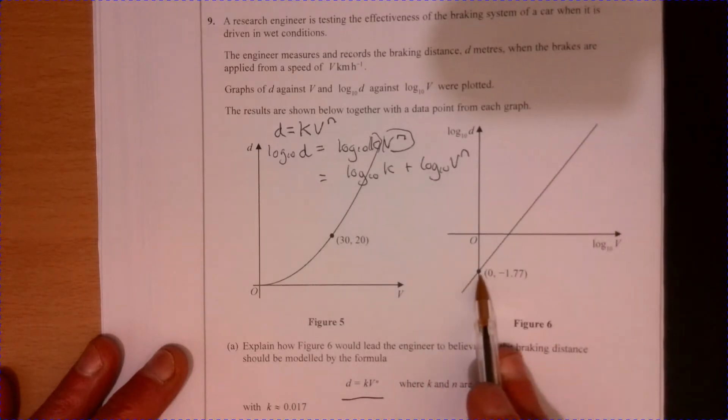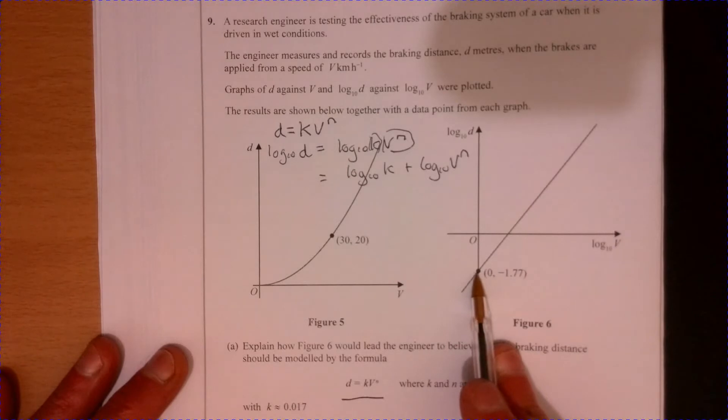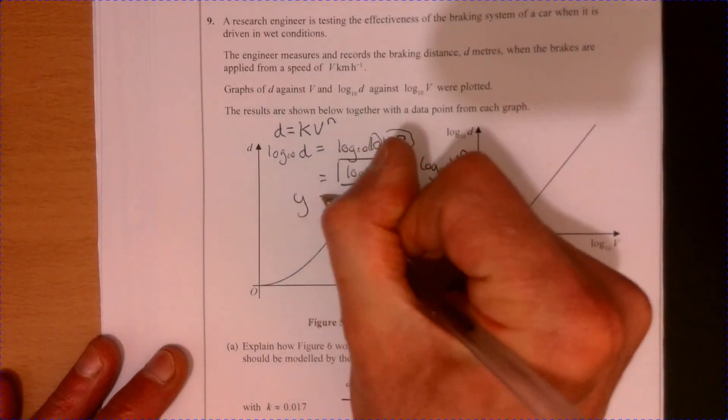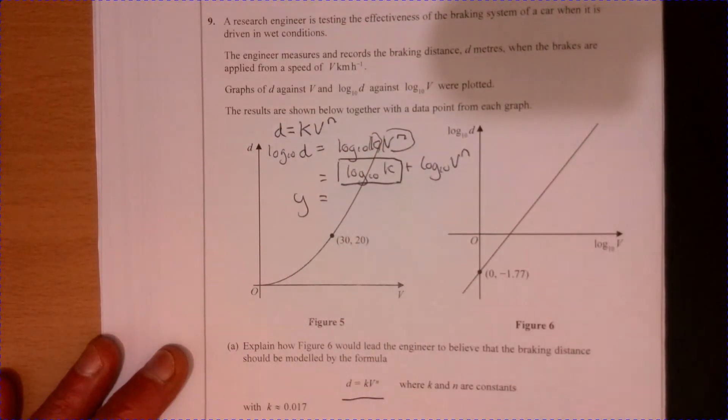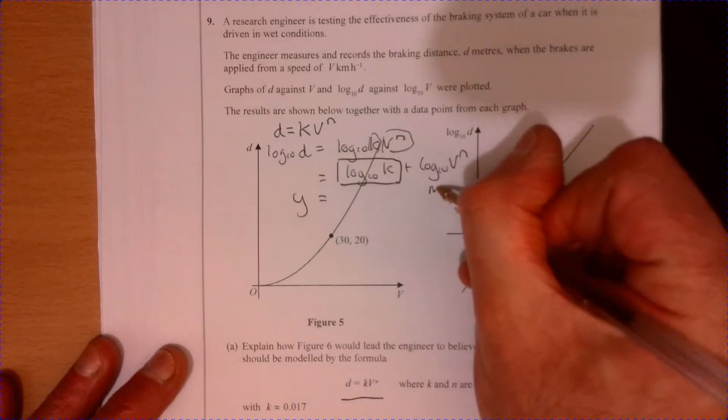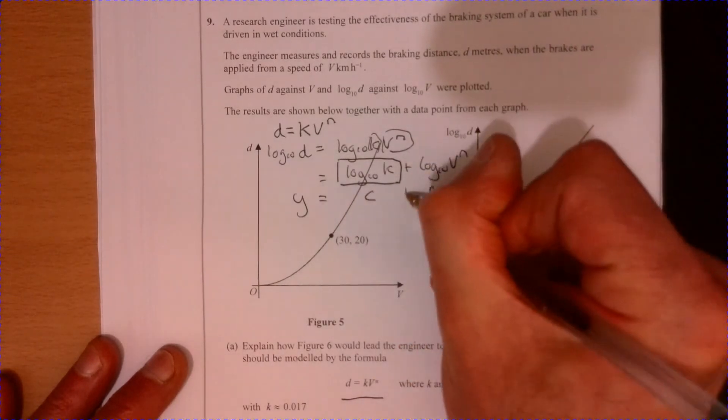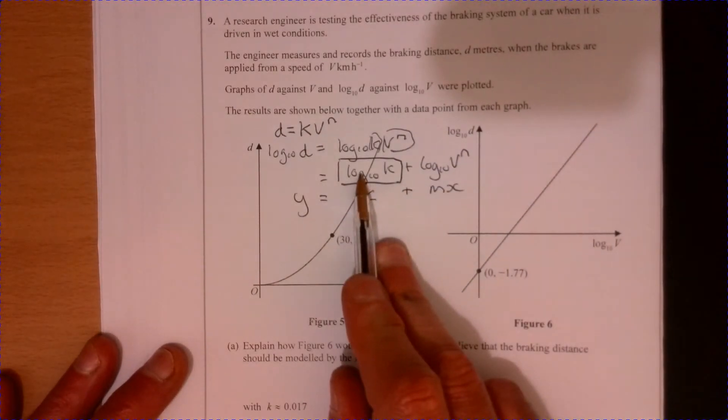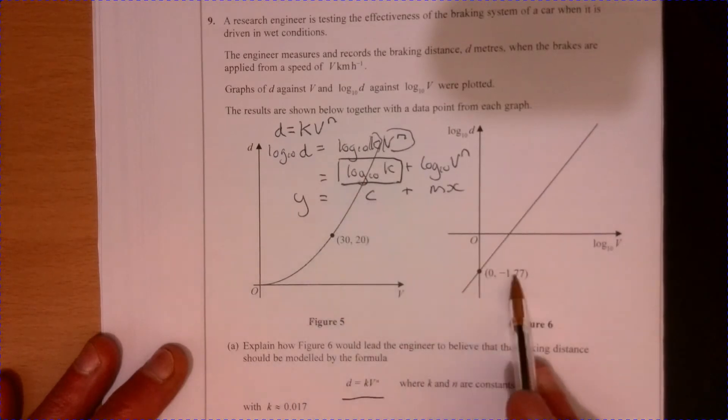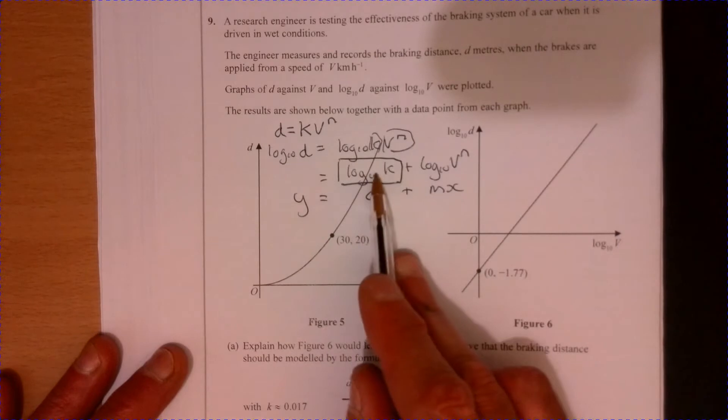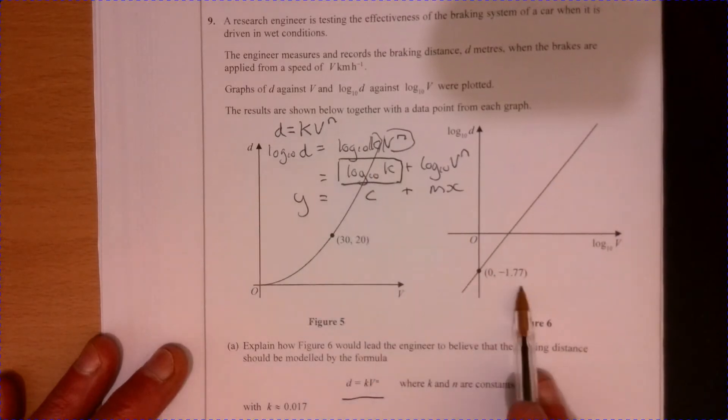I'm not going to worry too much about that there. Now what this is telling me is the y-intercept is this bit just here. Just think about what this is: y equals mx plus c. Well, this is the mx bit, this is the c bit, so this is equivalent to the constant just here.